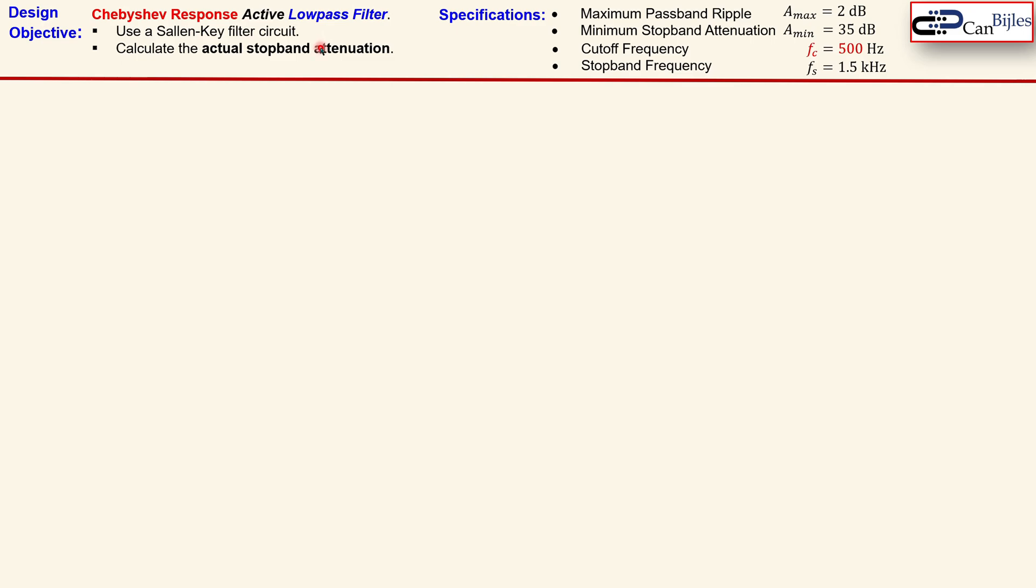We will clarify it in a minute. The specification for our design is shown here. Maximum passband ripple is 2 dB. The minimum attenuation at the stopband region must be 35 dB. The cutoff frequency is 500 Hz and the stopband frequency is 1.5 kHz.